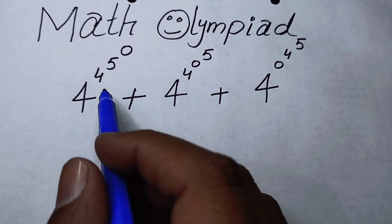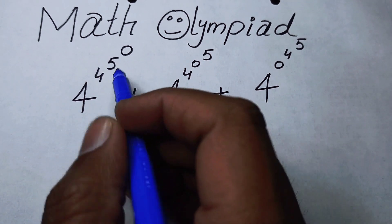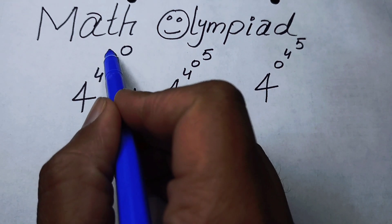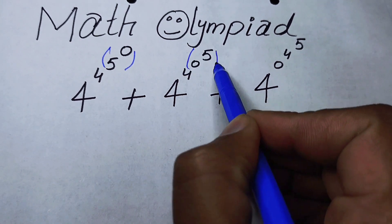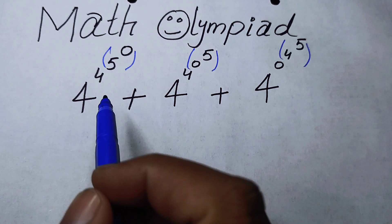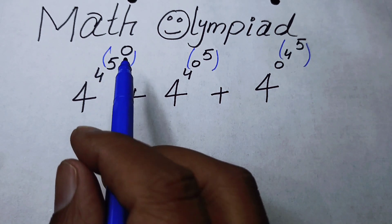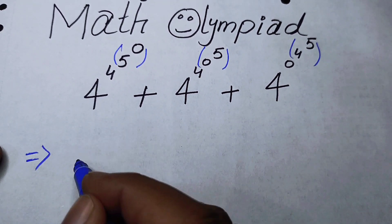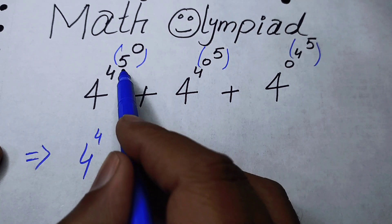The very first thing we are going to do is focus on the top of the exponents. I can write the top exponents in bracket form and first solve the top exponents, or the parentheses exponents. So I can write it as 4 to the power of 4.